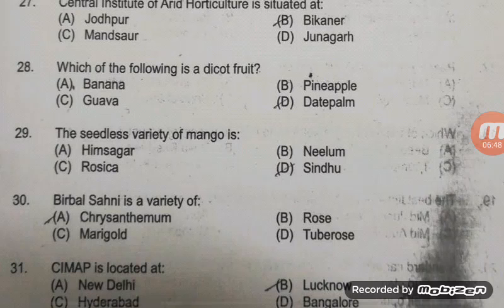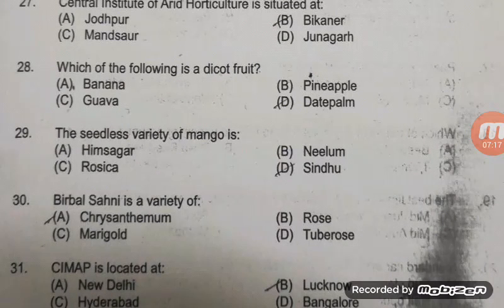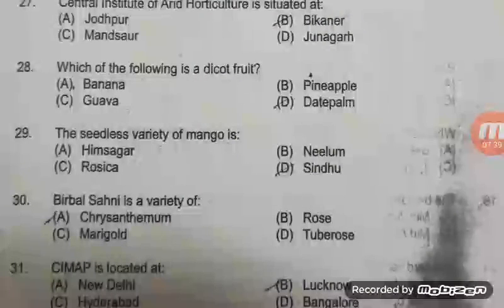Which of the following is a dicot fruit? Banana belongs to Musaceae, pineapple belongs to Bromeliaceae, and date palm and coconut belong to Arecaceae or Palmae — all are monocots. So date palm is monocot, pineapple is monocot, banana is monocot. The right answer is C — guava, which is a dicot. Please remember all three families; these are generally monocots.